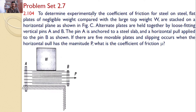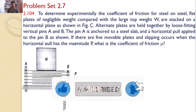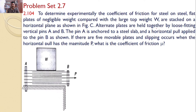To determine experimentally the coefficient of friction for steel on steel, flat plates of negligible weight compared with the large top weight W are stacked on a horizontal plane as shown in figure C. Alternate plates are held together by loose fitting vertical pins A and B. Pin A is anchored to a steel slab and a horizontal pull is applied to pin B. If there are 5 movable plates and slipping occurs when the horizontal pull has magnitude P, what is the coefficient of friction mu?